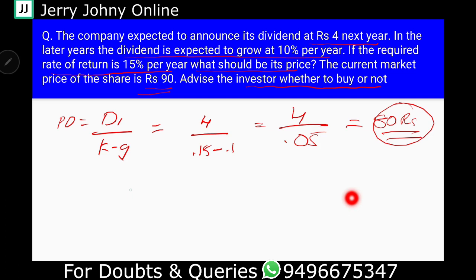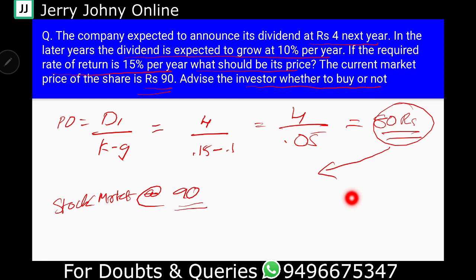Now the question is: if the stock is trading in the market at 90 rupees, but the actual intrinsic value is only 80 rupees — should we buy it or not? The actual value is 80 rupees, but it is being sold for 90 rupees. So the logical answer is a big no — it is not a good thing to buy.